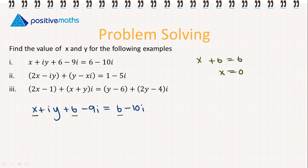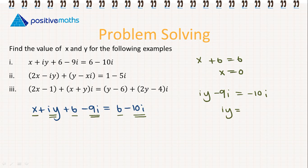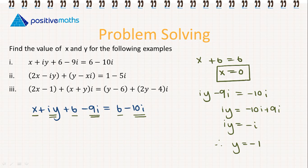Now to deal with the imaginary part. We have iy minus 9i equal to minus 10i. So therefore iy is going to be equal to minus 10i plus 9i, which gives iy equal to minus i. Therefore y is equal to minus 1. So we have x is equal to 0 and y is equal to minus 1.